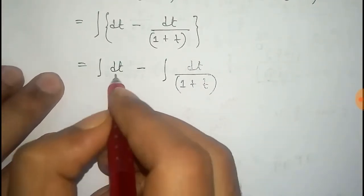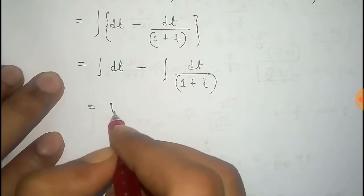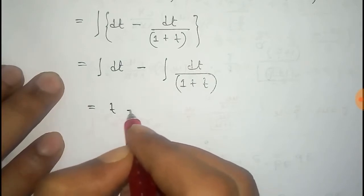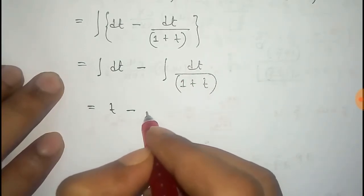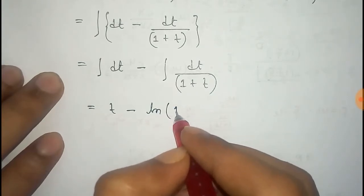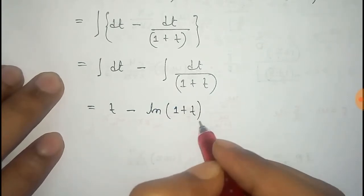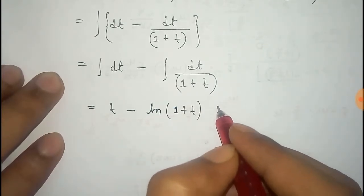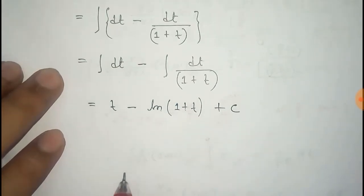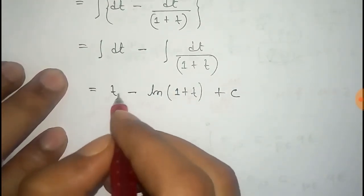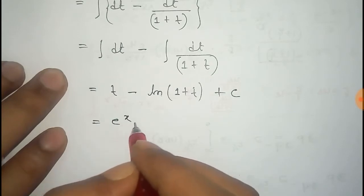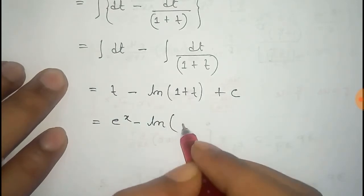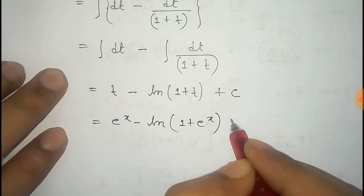Now we know that the integral of dt is clearly t. And the integral of 1 by 1 plus t dt is logarithm of 1 plus t. So we get t minus log of 1 plus t, plus a constant c. Now we have to put the value of t that we considered initially, which is e to the power x.